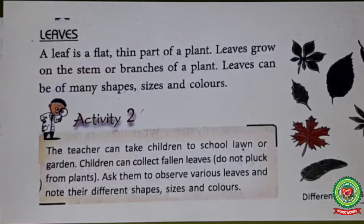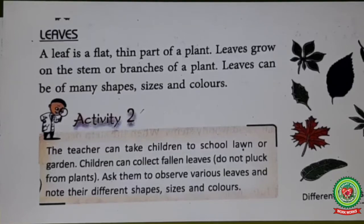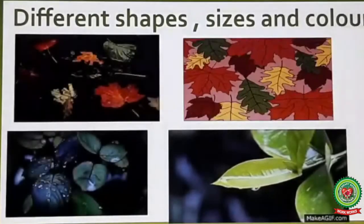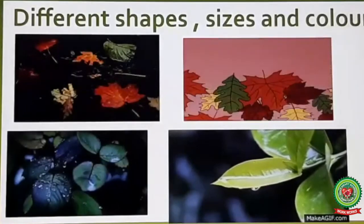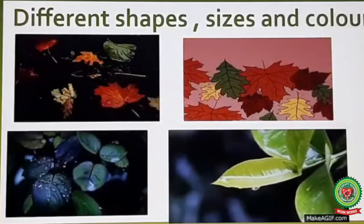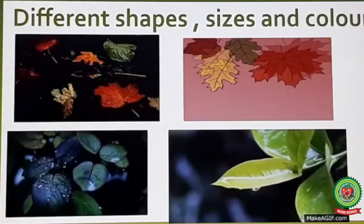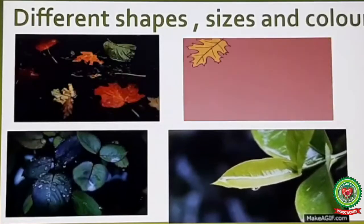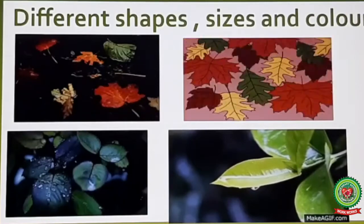A leaf is a flat, thin part of a plant. Leaves grow on the stem or branches of a plant. Leaves can be of many sizes, shapes, and colors. A leaf of a plant can be green or multicolored. Leaves come in different shapes and sizes — for example, leaves of the banyan tree and mango tree are of different shapes and sizes.